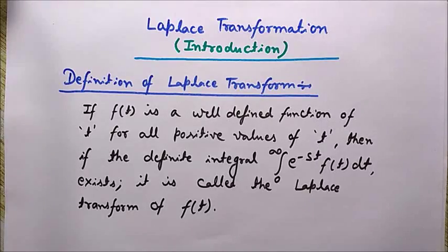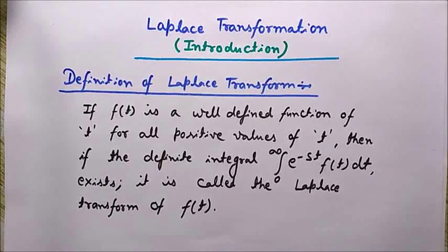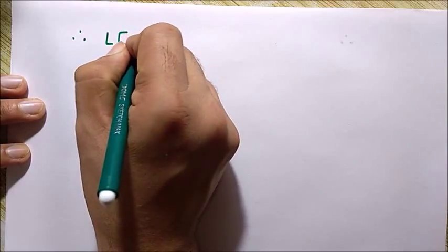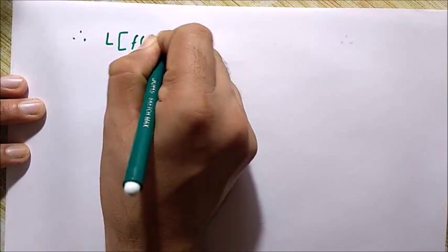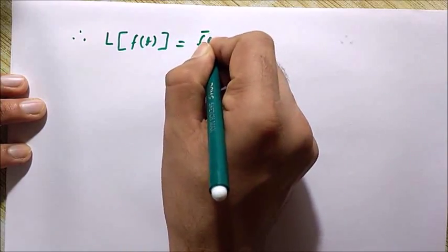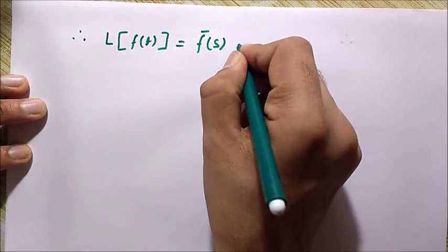So it means Laplace of f(t), we can denote it by this sign, f̄(s), is equal to the integral from 0 to infinity of e^(-st) f(t) dt. This is the relationship.